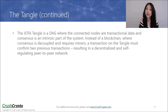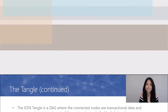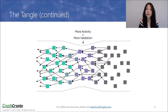Instead of a blockchain, where consensus is decoupled and requires miners, a transaction on the Tangle must confirm two previous transactions. This results in a decentralized and self-regulating peer-to-peer network. This is how IOTA transactions will always remain fee-less regardless of how large the network becomes. There are no miners to pay because the person sending a transaction is required to use a small amount of their computing power in order to confirm two previous transactions. As a transaction on the Tangle receives confirmations, the cumulative weight of the initial transaction builds up, making it more reliable, immutable, and secured within the Tangle forever.